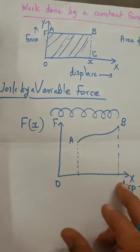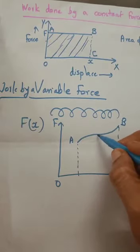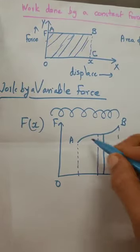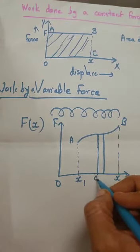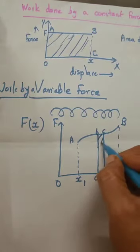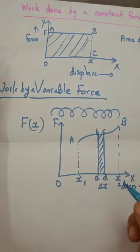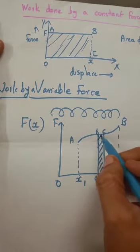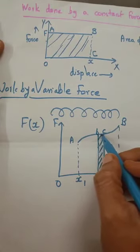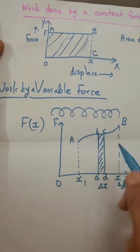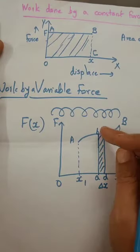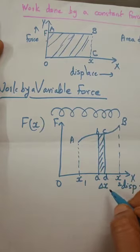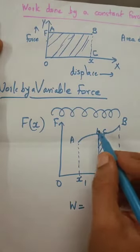We know that the area under this graph will give us the work done. We divide this area into small strips. One such strip goes from x1 to x2. Suppose one strip is ABCD, and the width of this strip is delta x. This delta x is so small that the force in this region is approximately constant — f(x) is almost constant. So we divide the whole area into such small intervals.